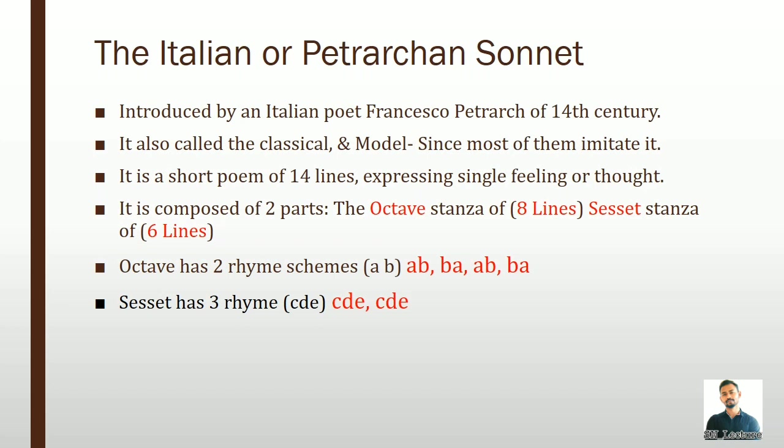The first type is the Italian or Petrarchan sonnet. It was introduced by the Italian poet Francesco Petrarch in the 14th century. It was called the classical model since most poets imitated it. He is the pioneer of the sonnet, and later many English poets started to imitate it.